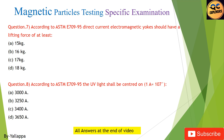Question 8: According to ASTM E709-95, the UV light will be centered on: (A) 3000 Å; (B) 3,400 Å; (C) 3,650 Å.